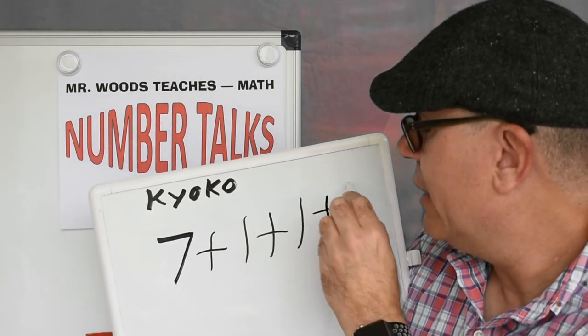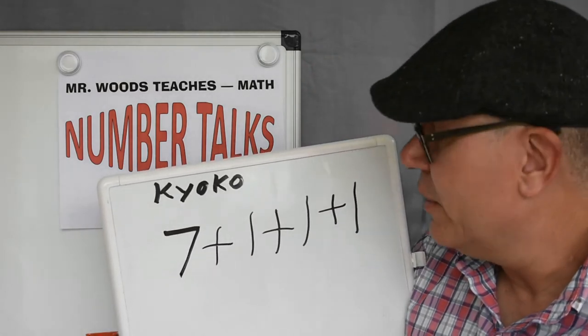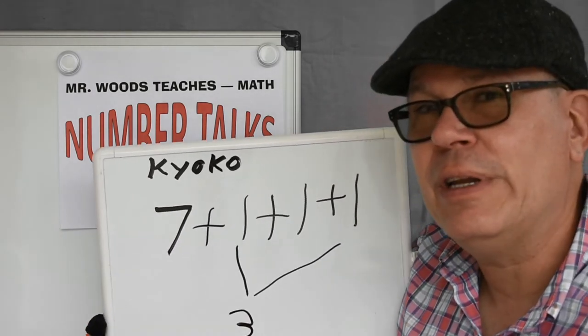And how many years more until ten? What do you think? Let's add one more. And that's eight, nine, ten. Oh, so if we add these together, we get three more years.